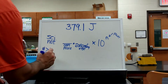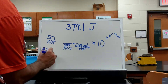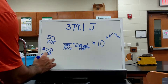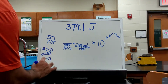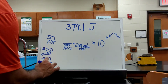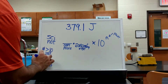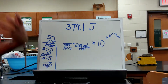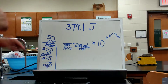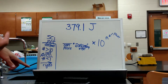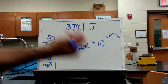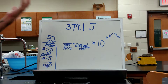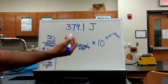For numbers greater than 10, I want to move to the left. For numbers that are less than 1, I'm going to move to the right. So for numbers greater than 10, I'm going to move to the left. For numbers that are less than 1, I'm going to move that decimal towards the right.